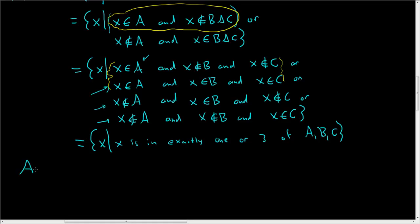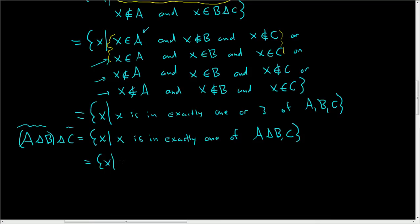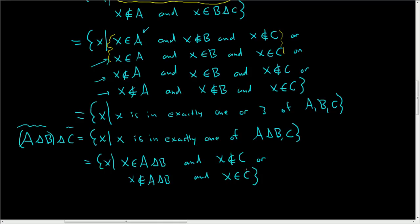Now we'll look at (A△B)△C and show it's equal to exactly the same thing. This is the set of all X such that X is in exactly one of (A△B) and C. Let's rewrite this: X is in the symmetric difference of A with B and X is not in C, or X is not in the symmetric difference of A with B and X is in C.